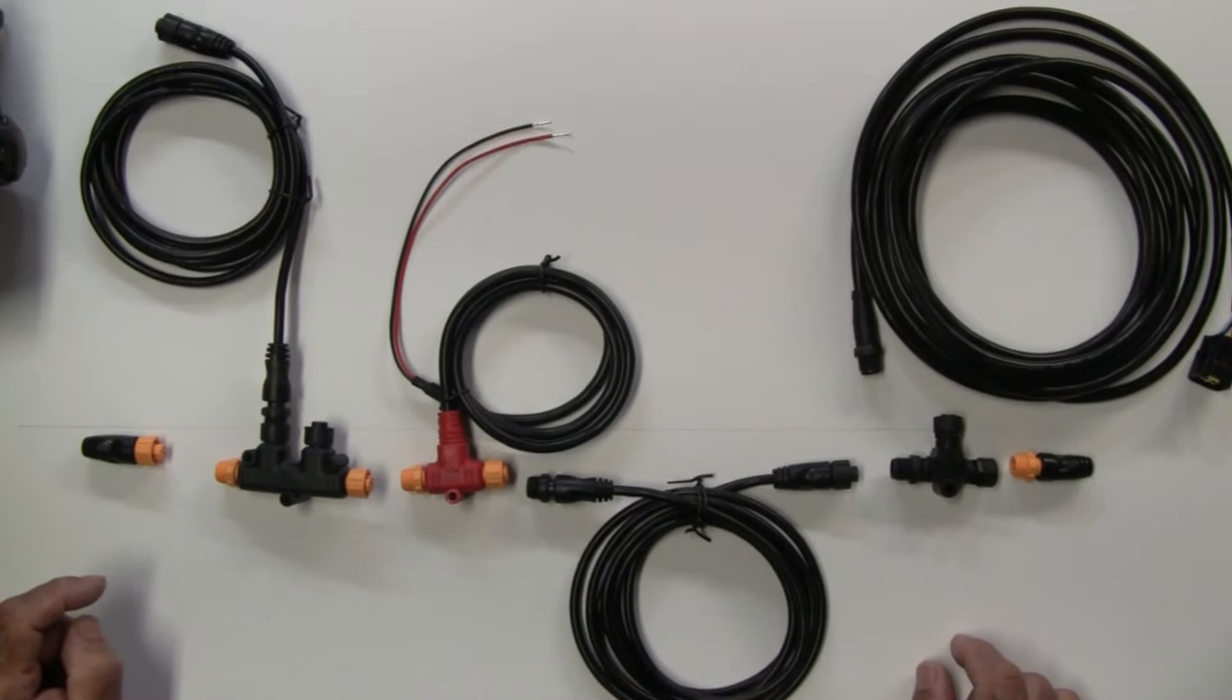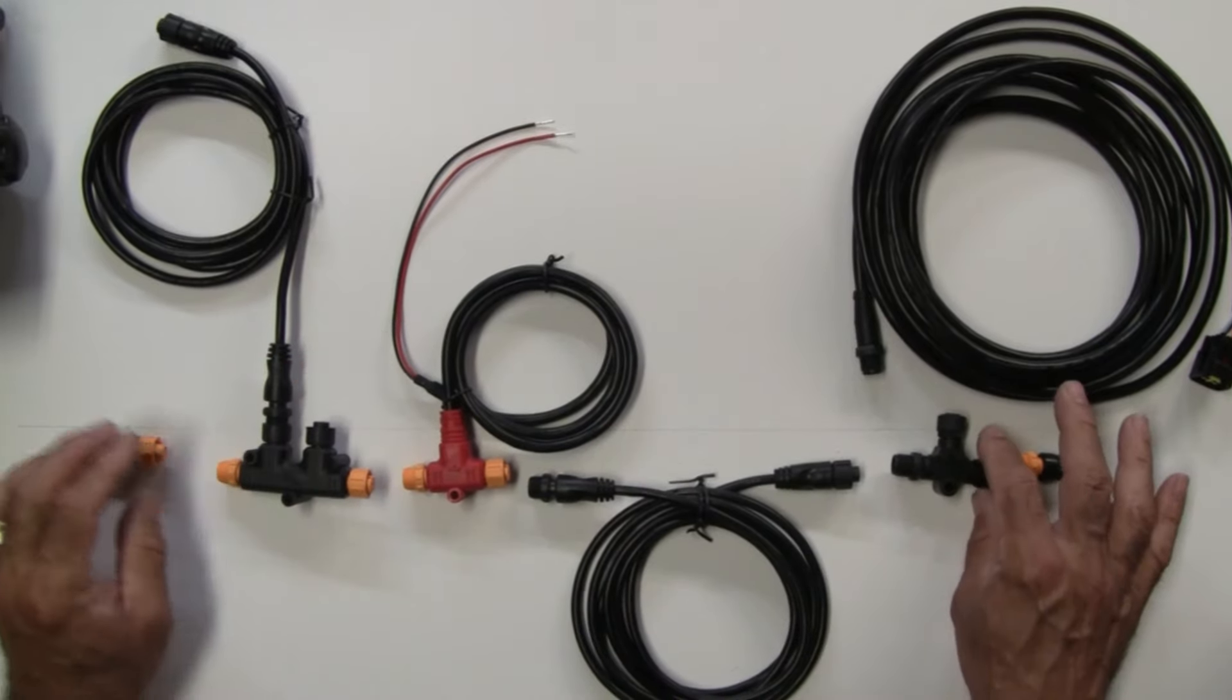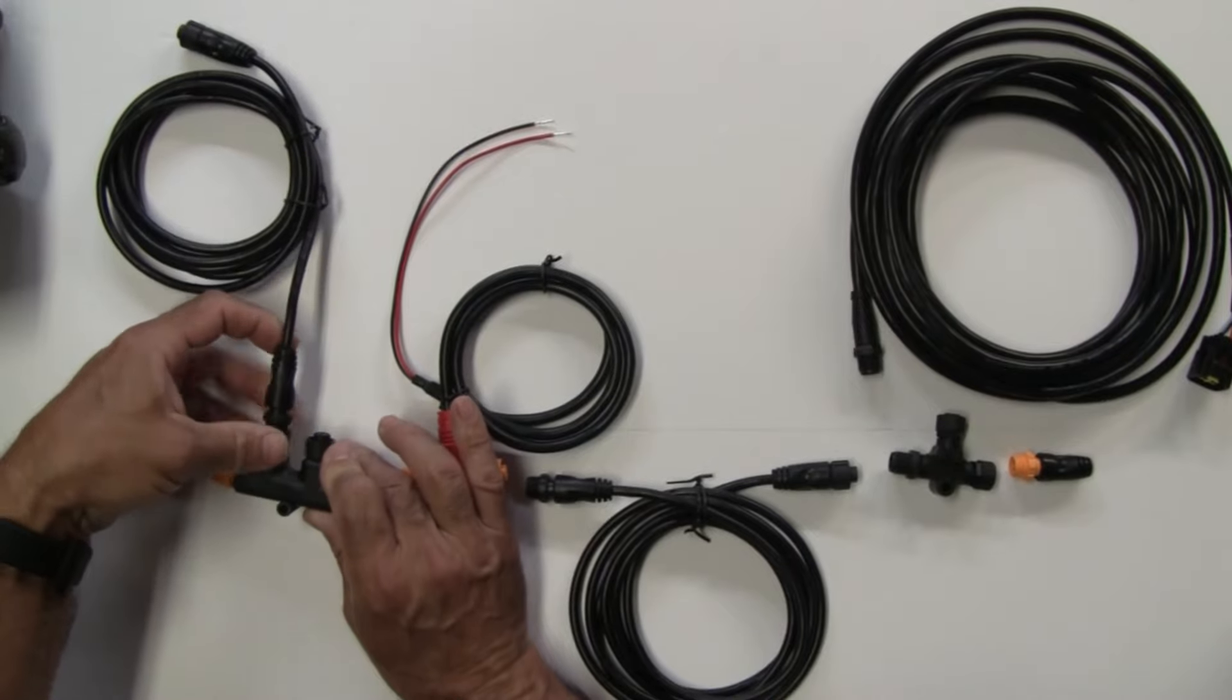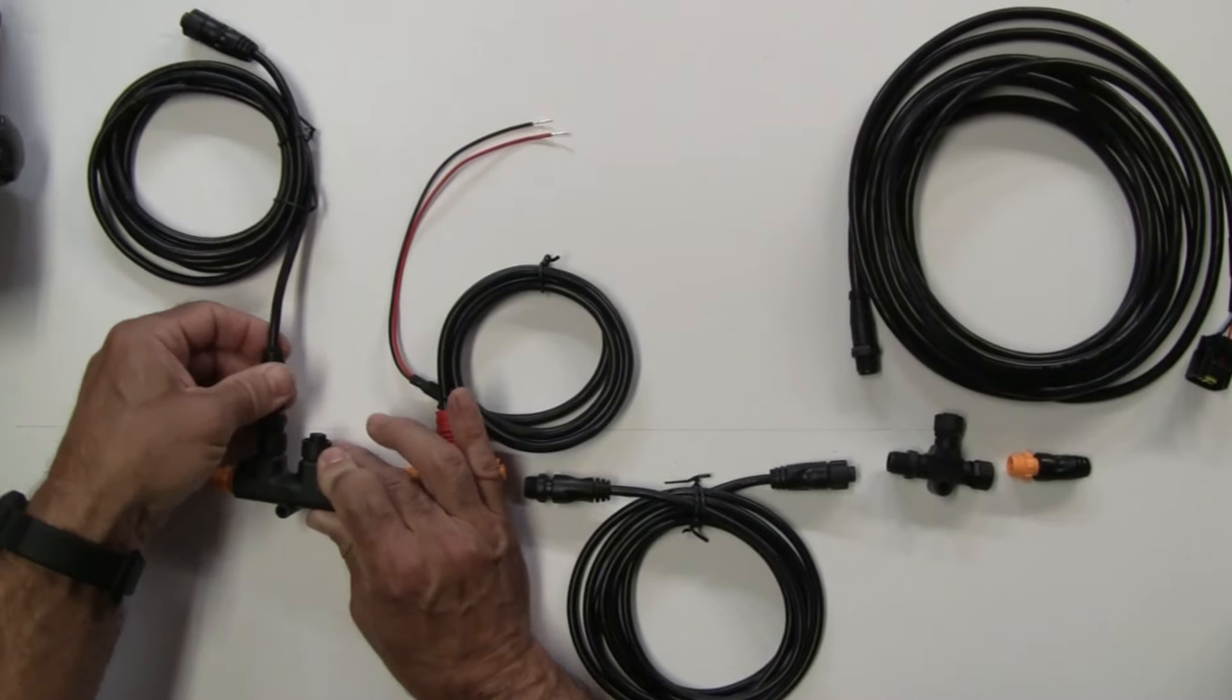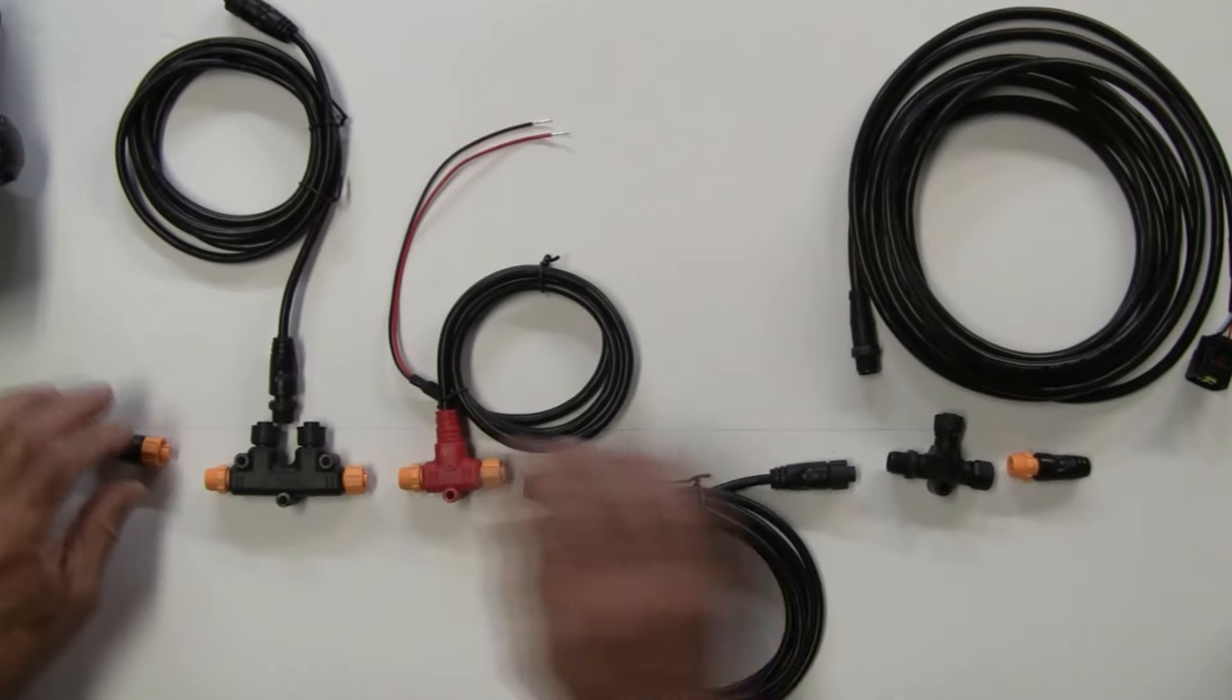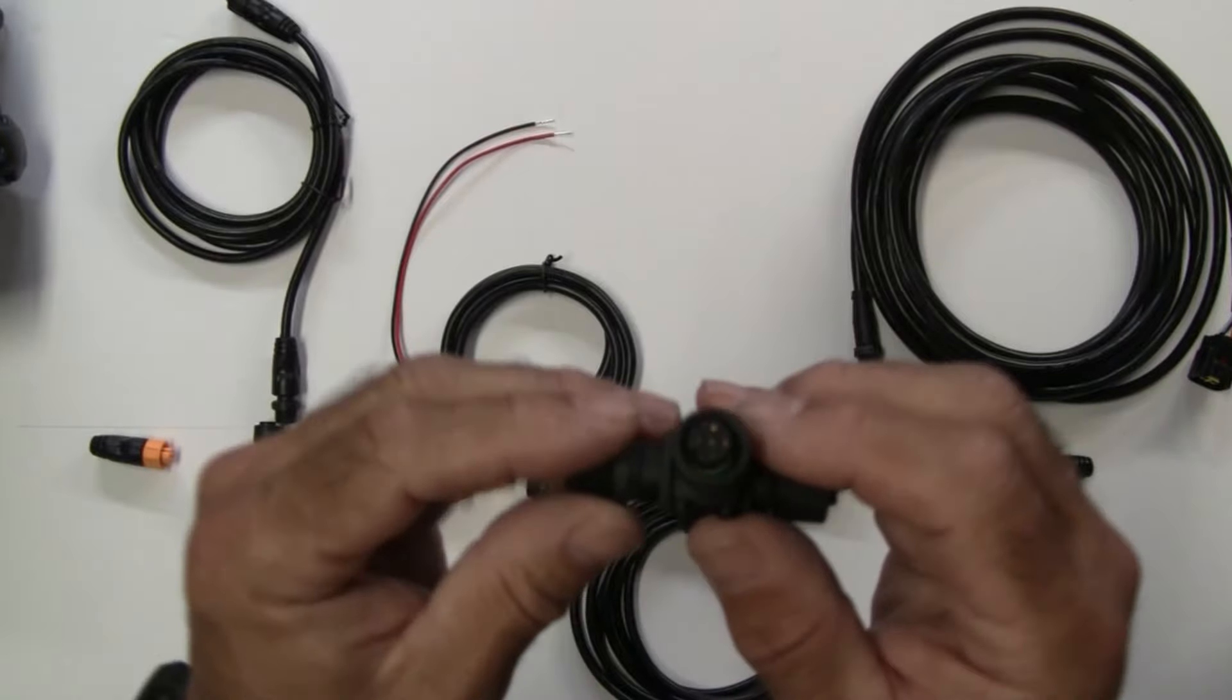Next most important piece is going to be a T connector. So this is a double T right here. Let's take this off. This is a double T which is acceptable. This is a single T. Let me show you some of the things that you probably should know about this.